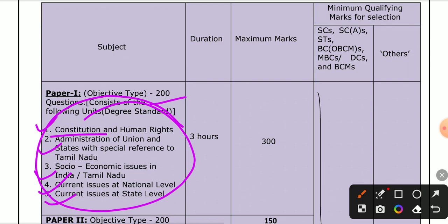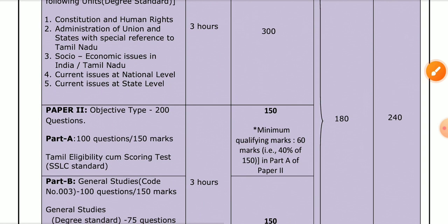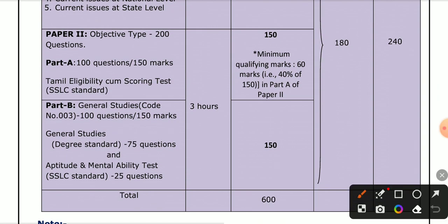The main page of the group tool — we have 300 marks. We have a number of papers. Then Paper 2 — the part is the Tamil Eligibility cum Scoring Test.